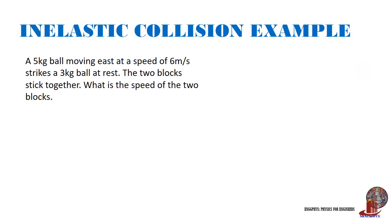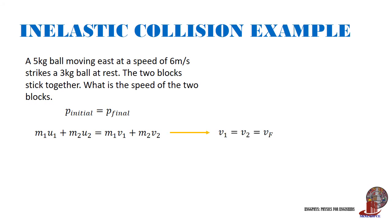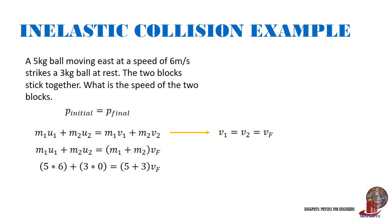Here is an example of inelastic collision. A 5-kilogram ball moving east at 6 meters per second strikes a 3-kilogram ball at rest, and the two blocks stick together. What is the speed of the two blocks? Conservation of momentum is used: M1U1 plus M2U2 equals (M1 plus M2) times Vf. Plugging values: 5 times 6 plus 3 times 0 equals 5 plus 3 multiplied by Vf, giving a final velocity of 3.75 meters per second.